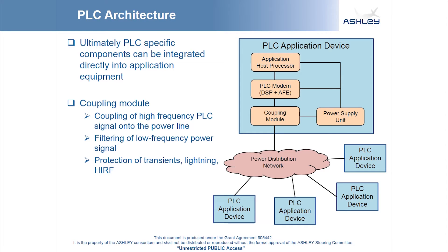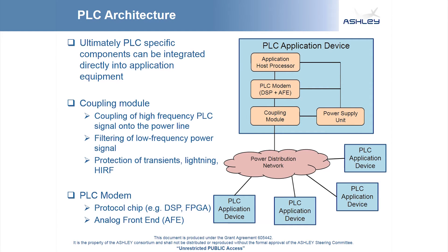The coupler also provides protection circuits against transients, lightning and HERF. A critical part of the coupler design is to ensure that the performance is not highly sensitive to the impedance conditions of the power line, as those may vary widely between different points on the power network. In addition to the coupler, the PLC modem consists of two main components: a protocol chip upon which the PLC protocol is realized, and an analog front end which provides digital and/or analog conversion and signal amplification. The protocol chip then provides one or more interfaces to the application host processor, providing data transmission services for the host.